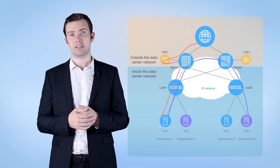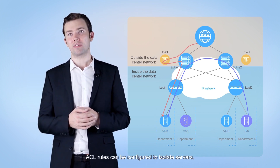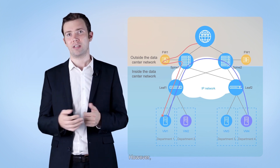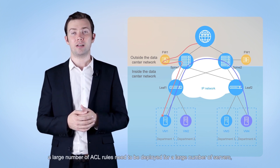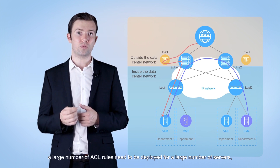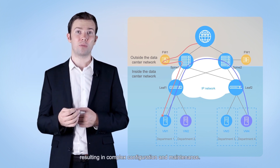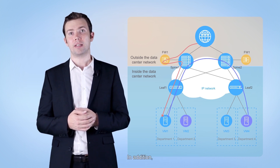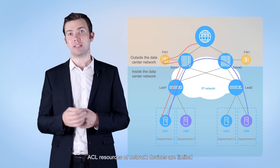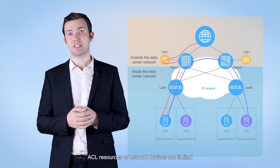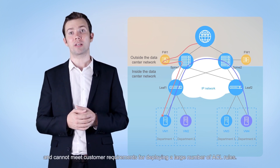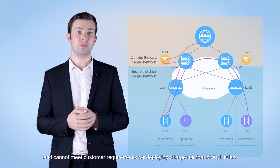Second, ACL rules can be configured to isolate servers. However, in a data center, a large number of ACL rules need to be deployed for a large number of servers, resulting in complex configuration and maintenance. In addition, ACL resources of network devices are limited and cannot meet customer requirements for deploying a large number of ACL rules.